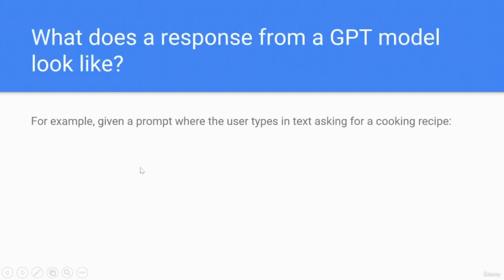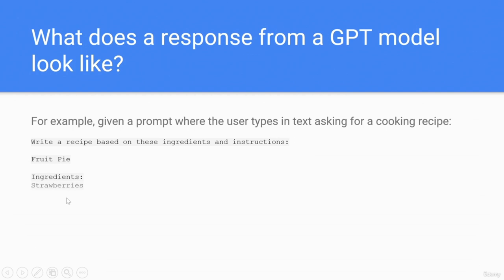For example, given a prompt where the user types in text asking for a recipe: 'Write a recipe based on these ingredients and instructions — Fruit Pie: ingredients: strawberries, blueberries, flour, eggs, milk,' the model generates a recipe response.